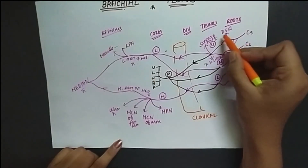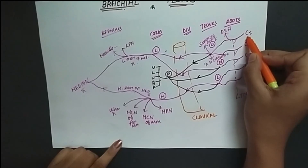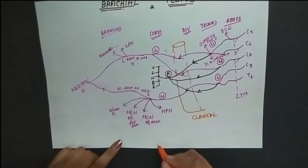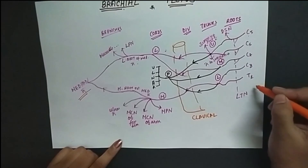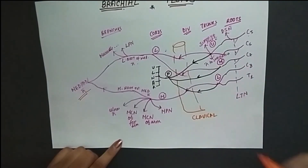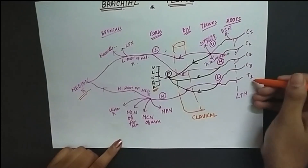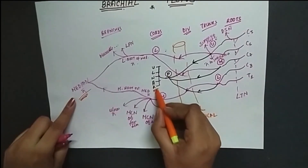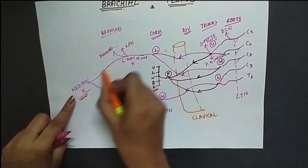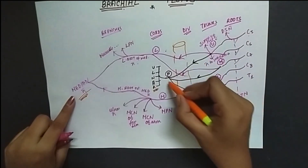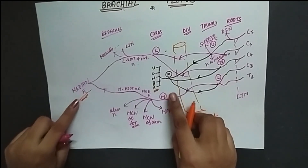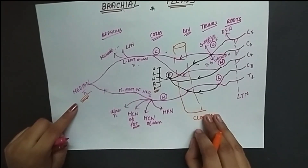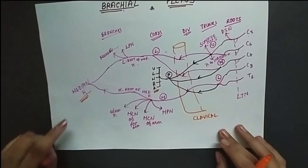From this diagram you can identify the nerve roots of all these nerves. For example, the dorsal scapular nerve arises from only C5, so its nerve root is C5. The median nerve arises from all parts, so its nerve root is C5 to T1. The radial nerve has the same root C5 to T1 as the median nerve, but the difference is that the median nerve is formed by anterior branches while the radial nerve is formed by the posterior branches.